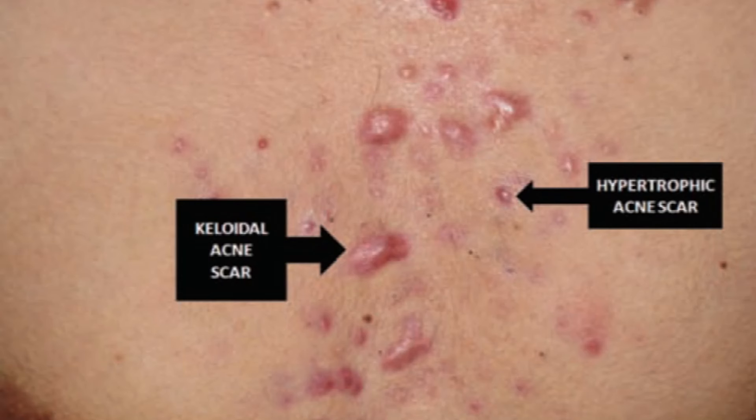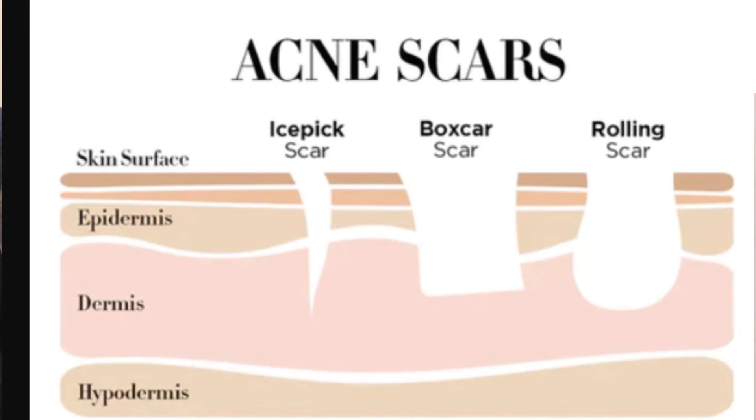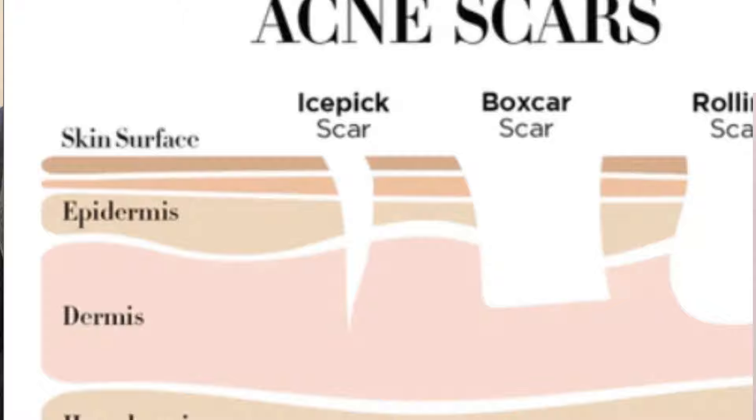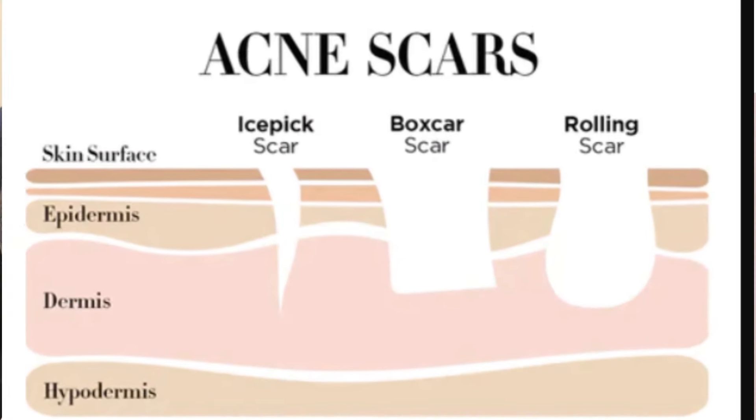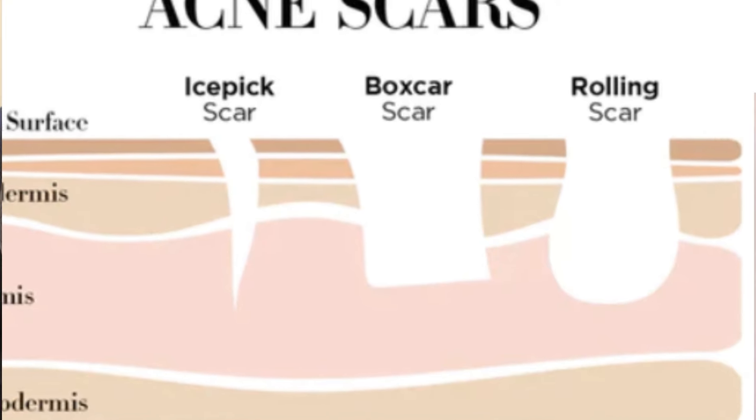As a dermatologist, we classify acne scars into two main types: atrophic and hypertrophic. Atrophic means we can see crater-like depressions in the skin. Ice-pick scars are one type of atrophic scar, and rolling scars are another.